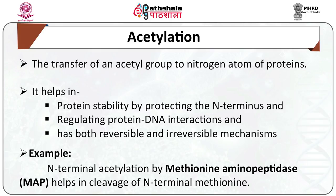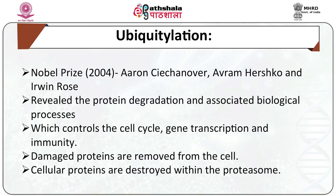Acetylation takes place in almost all eukaryotic cells and involves the transfer of an acetyl group to the nitrogen atoms of the protein. It helps in protein stability by protecting the N-terminus and regulating protein-DNA interactions in the case of histones, and has both reversible and irreversible mechanisms. N-terminal acetylation is done by methionine aminopeptidase (MAP), which results in cleavage of the N-terminal methionine before replacing it with an acetyl group from acetyl-CoA by the enzyme N-acetyltransferase.